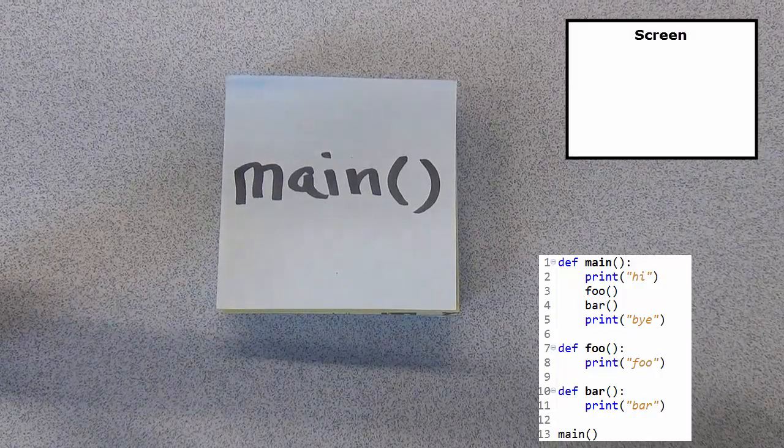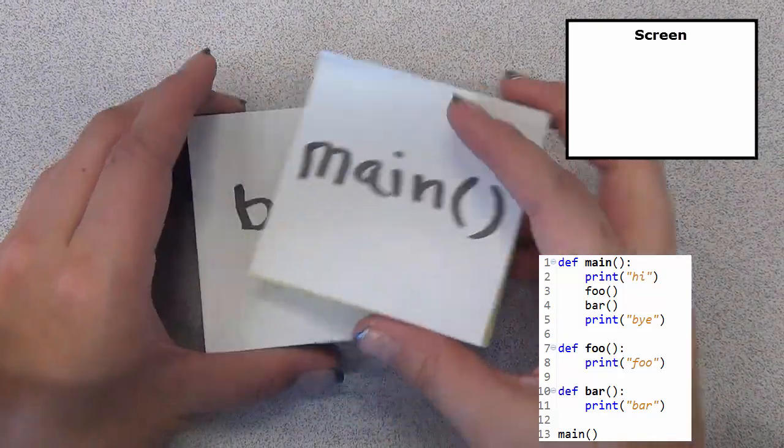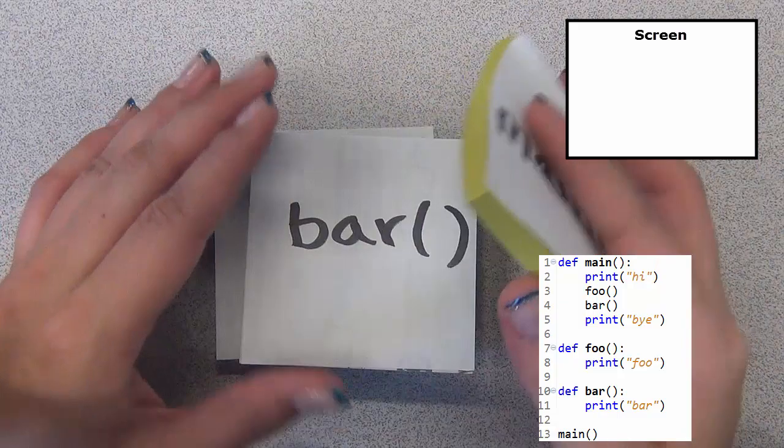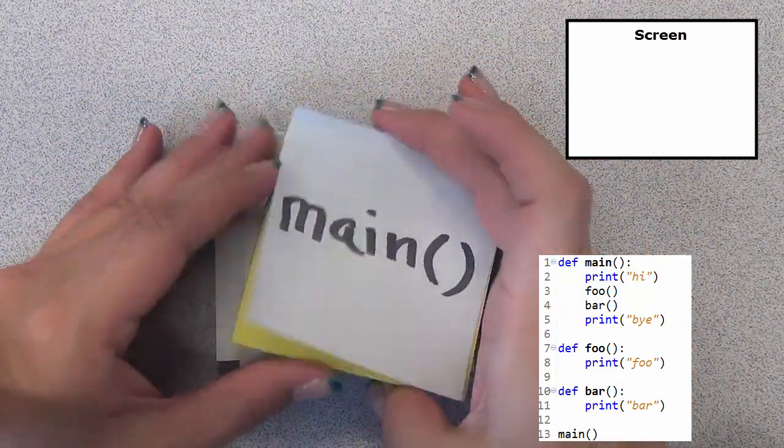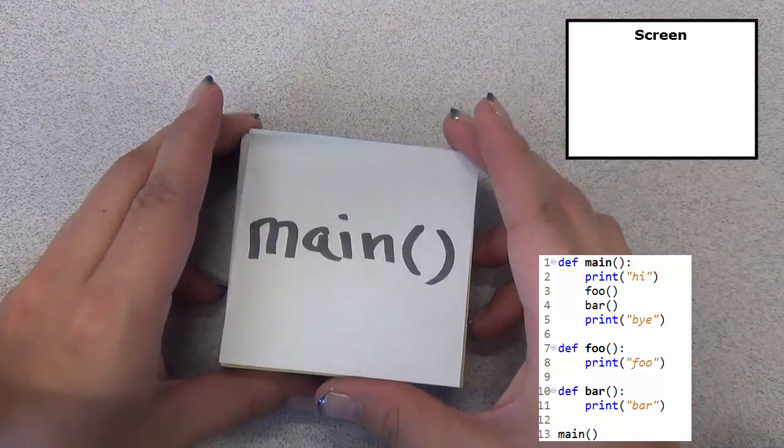What I have done here is write the function names on the back of pads of post-it notes. On the notes themselves are lines of code. I'll go through them and execute them according to how the computer would.